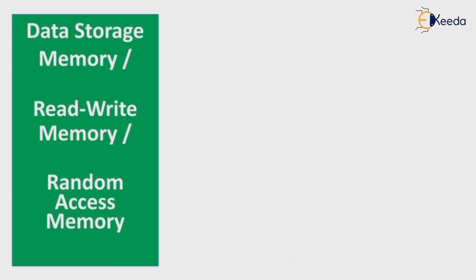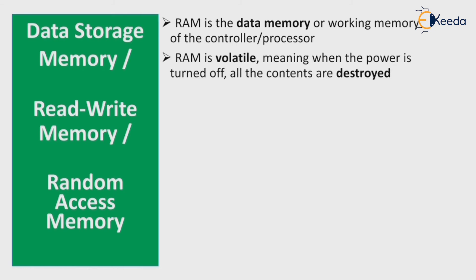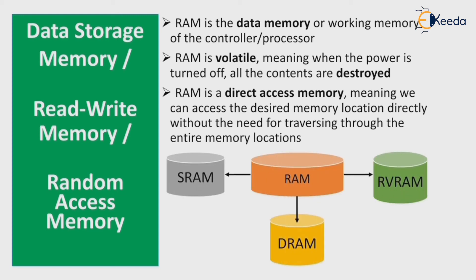Now let's look at data storage memory, also called read-write memory or Random Access Memory. RAM is the data memory or working memory of the controller or processor. RAM is volatile — when power is turned off, all content is destroyed. RAM is direct access memory, meaning you can access the desired memory location directly without traveling through the entire memory. RAM types include SRAM (Static RAM), DRAM (Dynamic RAM), and NV RAM.